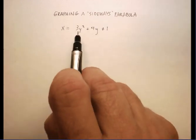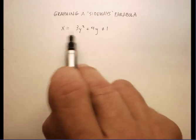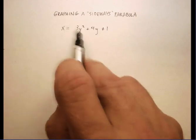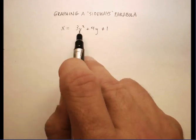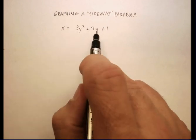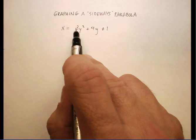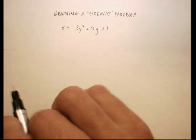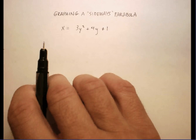Well, you'll notice that this is a regular quadratic equation, except that I have interchanged the x and the y. So instead of y equals 3x squared plus 4x plus 1, it's x equals 3y squared plus 4y plus 1. So that's your clue that your parabola is going to open up sideways.